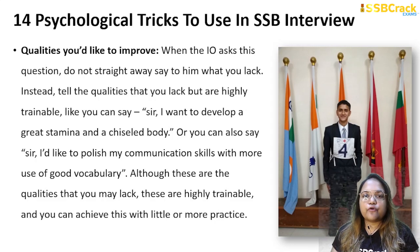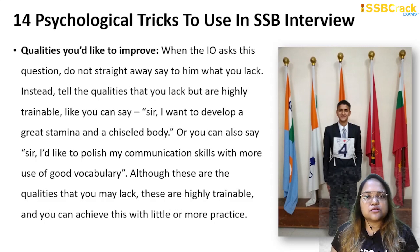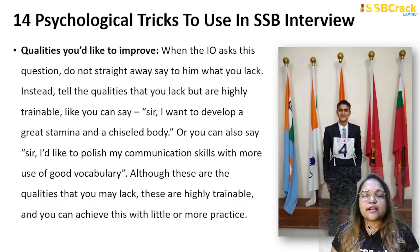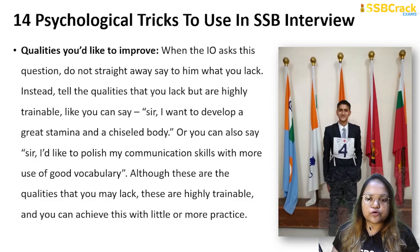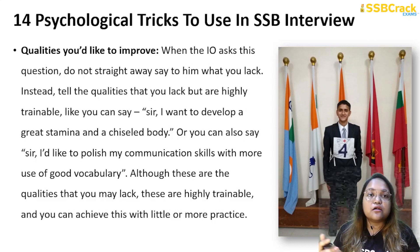The last psychological trick is about answering 'what qualities would you like to improve?' Do not straightforwardly tell the interviewer what you lack. Instead, mention qualities that you lack but are highly trainable. For example, you can say 'I want to develop great stamina and a chiseled body' or 'I'd like to polish my communication skills with more use of good vocabulary.' These are qualities you may lack but can easily improve with practice. Avoid mentioning very negative or hard-to-develop qualities.